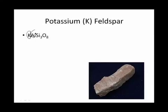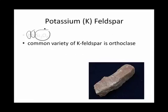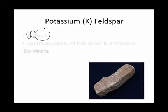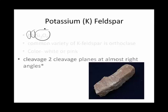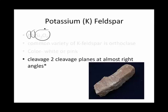Potassium feldspar, as you might guess, has potassium, and aluminum, and silicon, and oxygen. A very common variety of potassium feldspar is orthoclase. It could be either white or pink. It breaks in two cleavage planes almost at right angles.